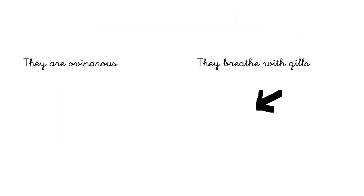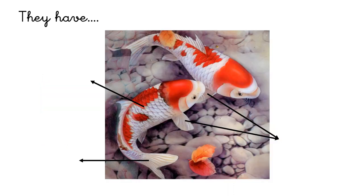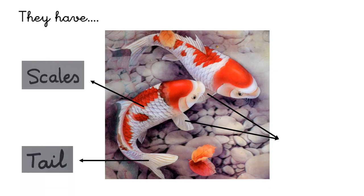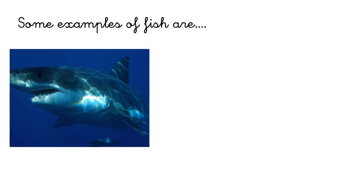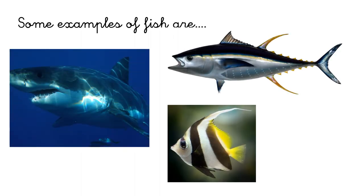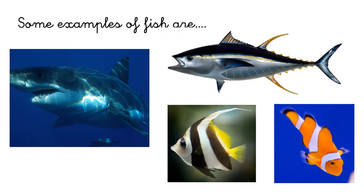Fish are oviparous. They are born from an egg, and they breathe with gills. They have scales, tail, and fins. Some examples of fish are the shark, the tuna, the angel fish, and the clown fish.